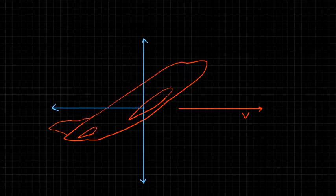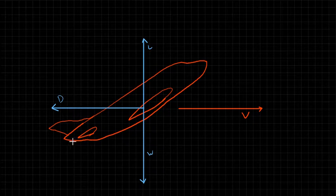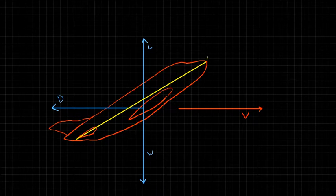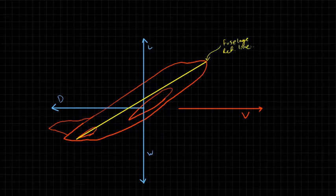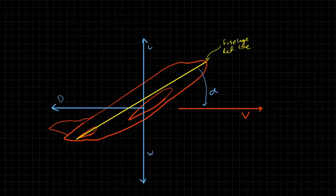Now before labeling thrust, let's look at another important line on the aircraft — I'll do this one in yellow. If we take a line from the tail to the tip of the aircraft, that represents the orientation of the aircraft. We call this the fuselage reference line. The angle of attack is measured from the fuselage reference line to the velocity vector — this is a very exaggerated angle of attack for illustration purposes.